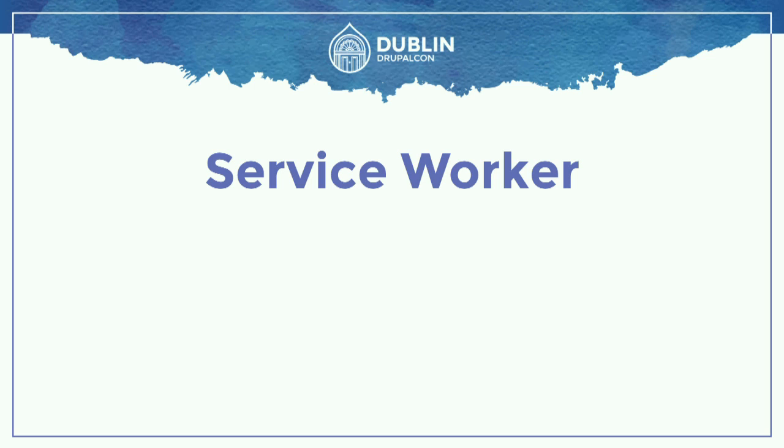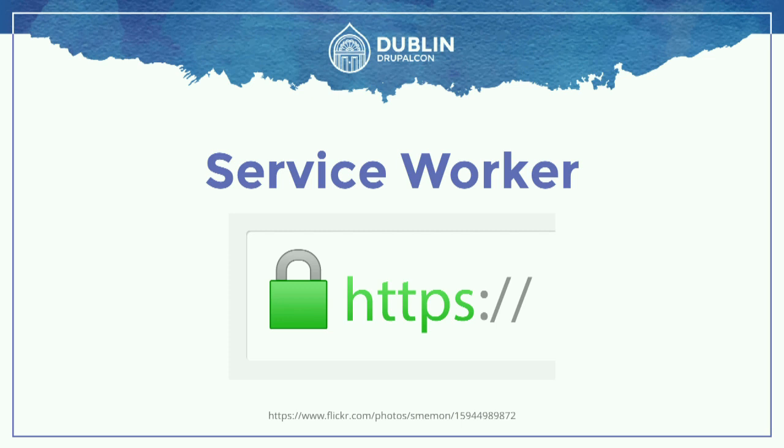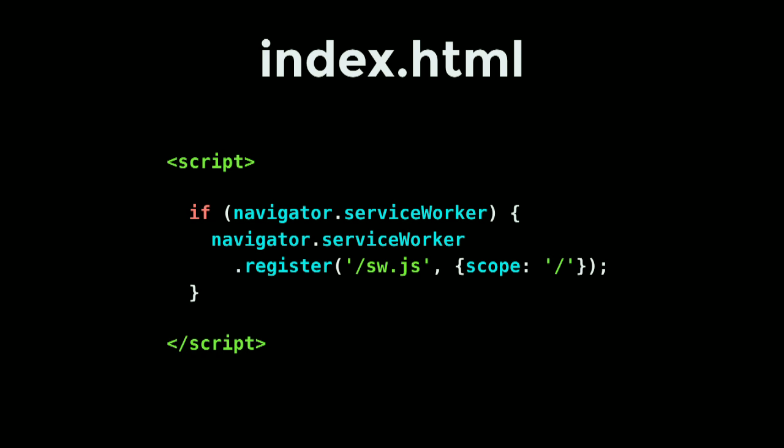To get started, first we need to be running HTTPS. Secondly, we add a small script to our code. In our HTML file we register a service worker inside a condition: if the browser supports it, start it; if not, ignore it. We pass it the name of another script that tells the service worker what to do. The scope parameter means any subsequent visits to pages within that scope will be handled through the service worker — including images, fonts, CDN resources, Ajax, and Google Analytics.